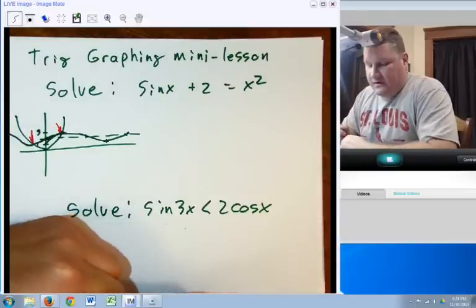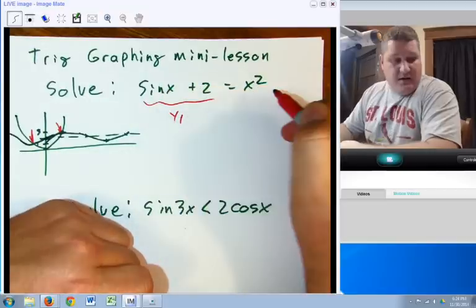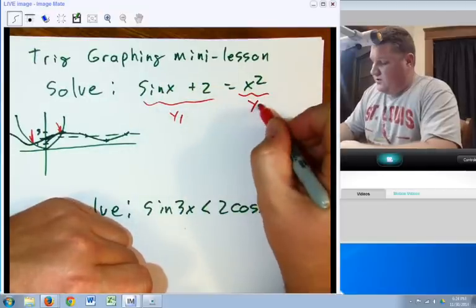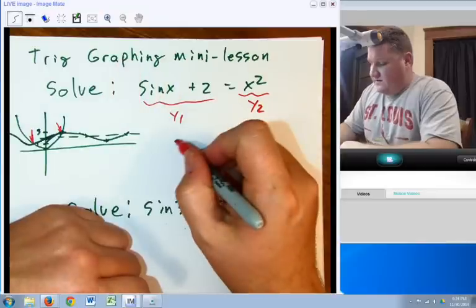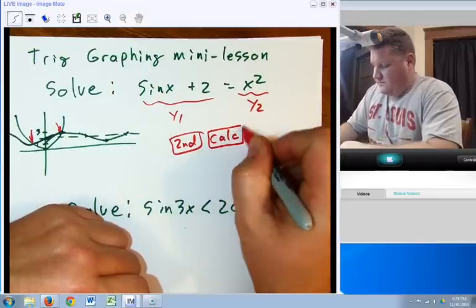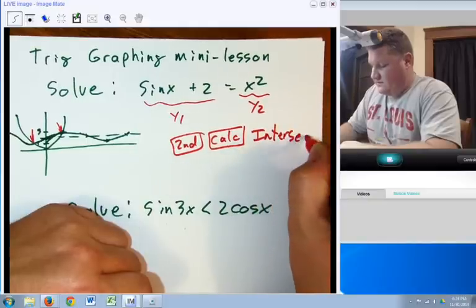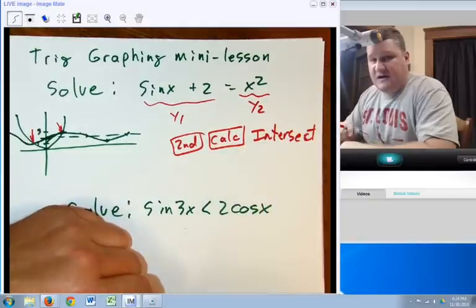Well, the easiest thing we can do here is take this and put it in y1. Take this, put it in y2, graph them both, and then use second, calc, and we want the intersect. We want the intersect function.